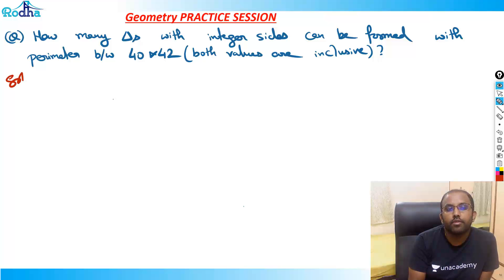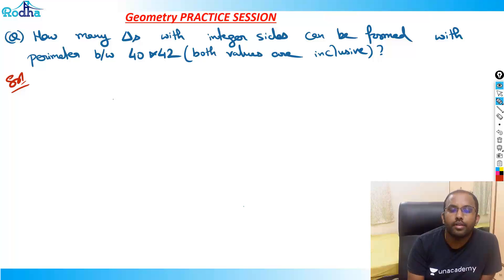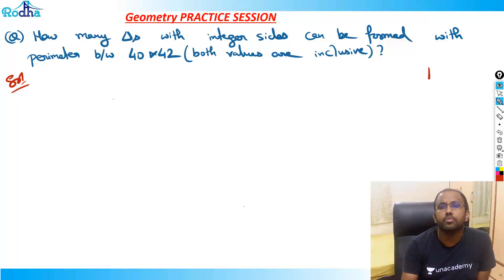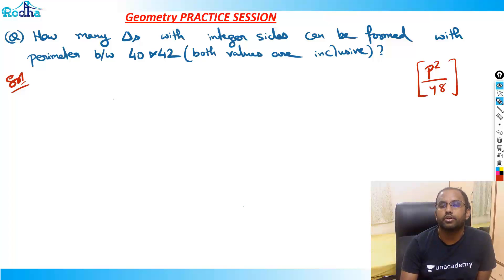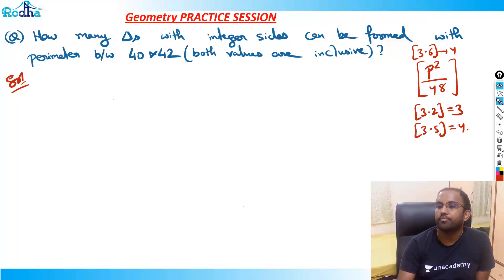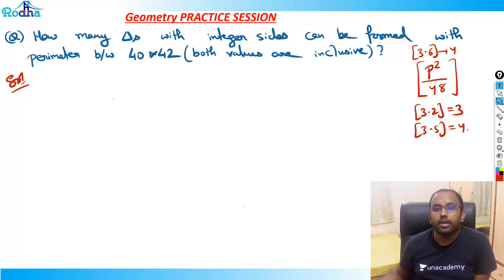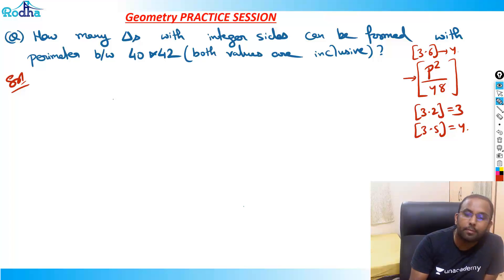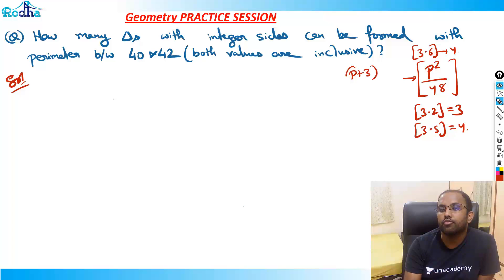The total number of triangles when the perimeter P is even is P² / 48 (using the nearest integer function). When P is odd, the total number of triangles is (P + 3)² / 48. So with these concepts you can easily apply them to this question.